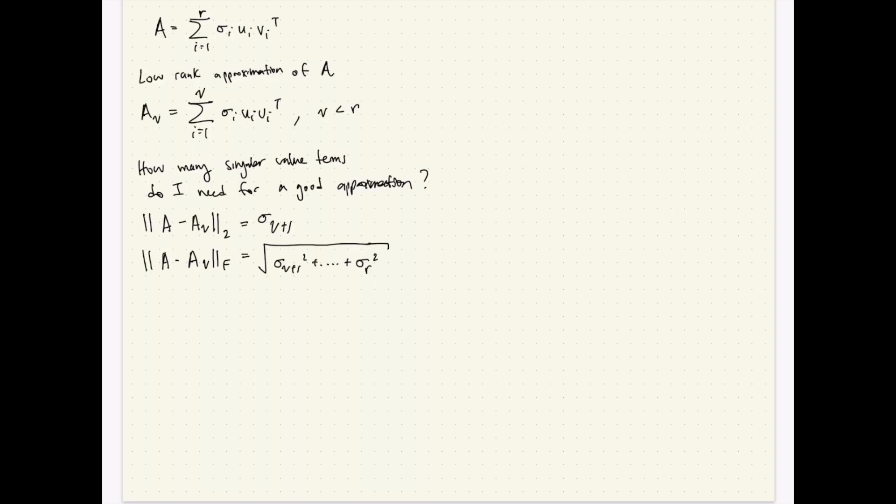This is one cool way to look at it. I obviously would want the right-hand side to be small, right? If my A nu is good enough, then it should be pretty close to A. What I'd rather look at is, let's say I want to keep some fraction of the matrix A.